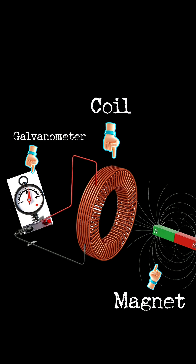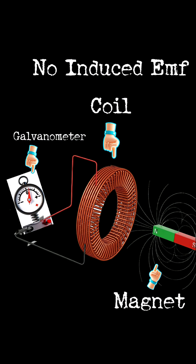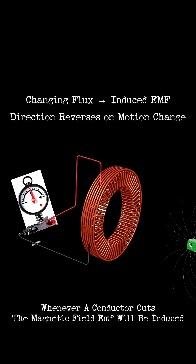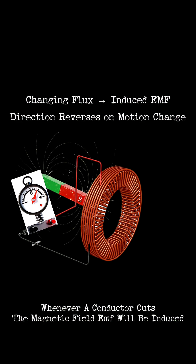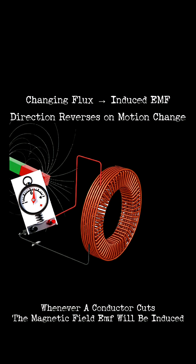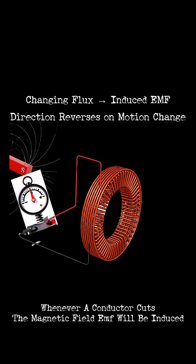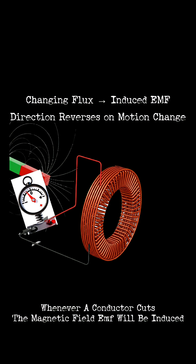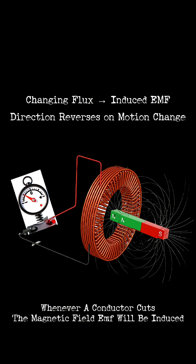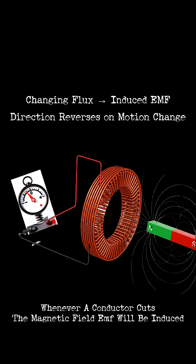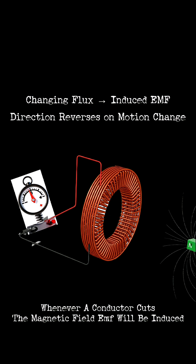When nothing moves, the magnetic field is steady and no EMF is induced. When the magnet moves, the magnetic flux through the coil changes. The galvanometer needle deflects one way when the magnet enters, and the opposite way when it leaves. This proves that a change in magnetic field induces an EMF.